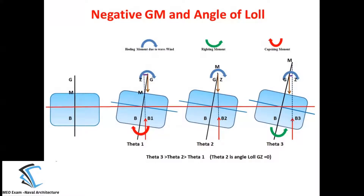In the earlier classes we discussed the stability of the ship. We saw that if the GM is positive, the ship will come back to its original position — that type of ship we call a stable ship. Then we saw if the GM is negative, it means G is above the metacenter, and the ship becomes unstable and will not come back to its original position. In today's class we will see what happens when the initial GM is negative.